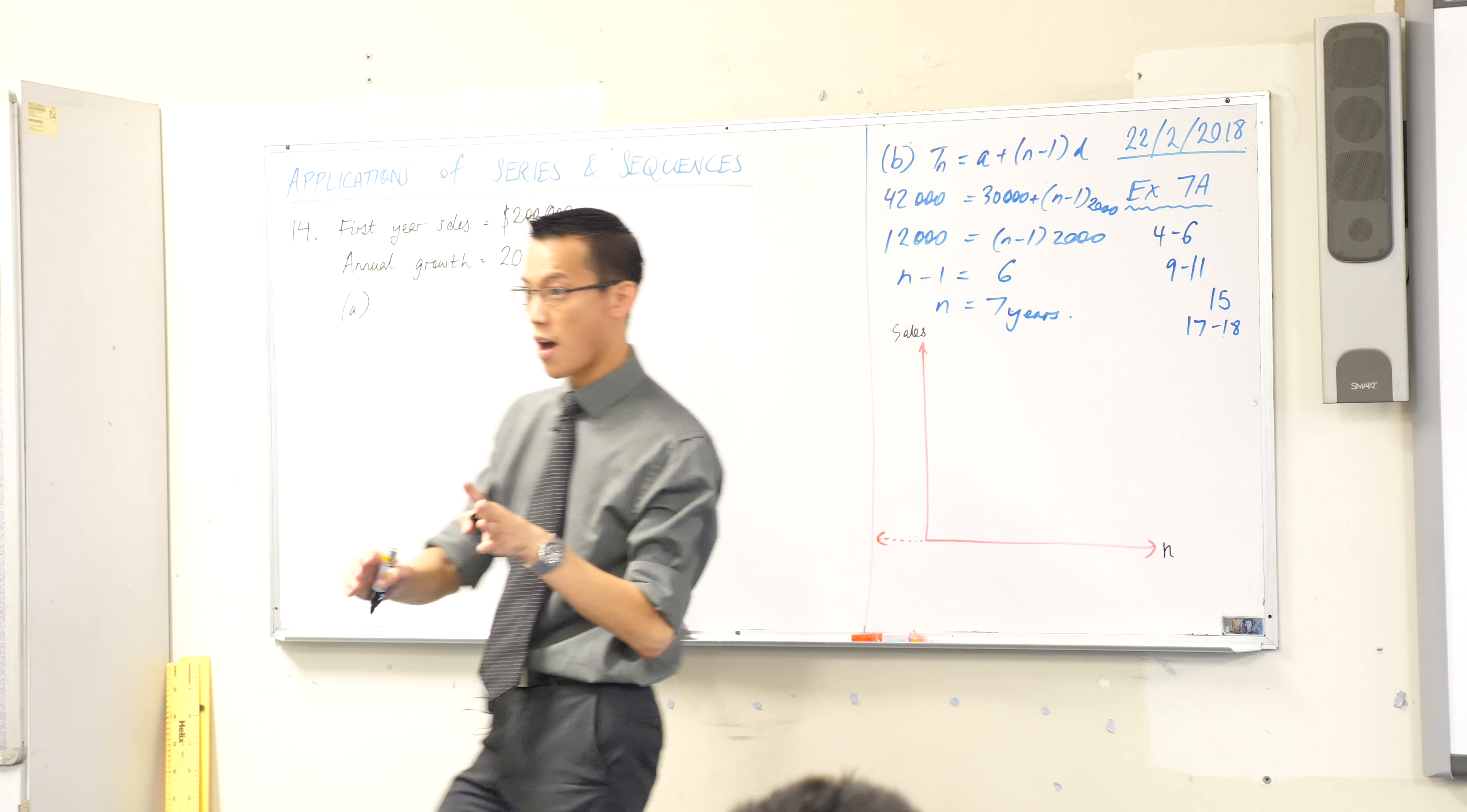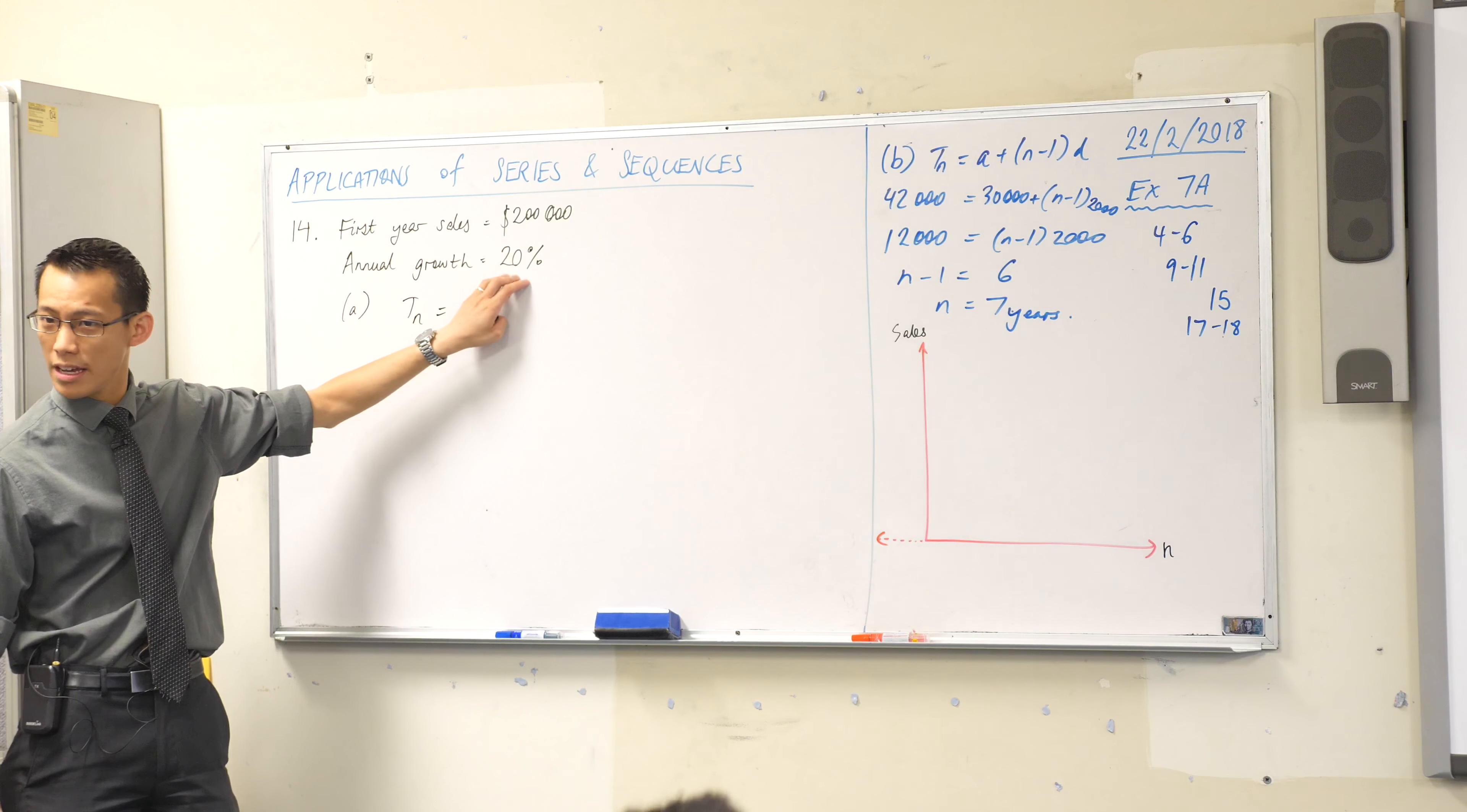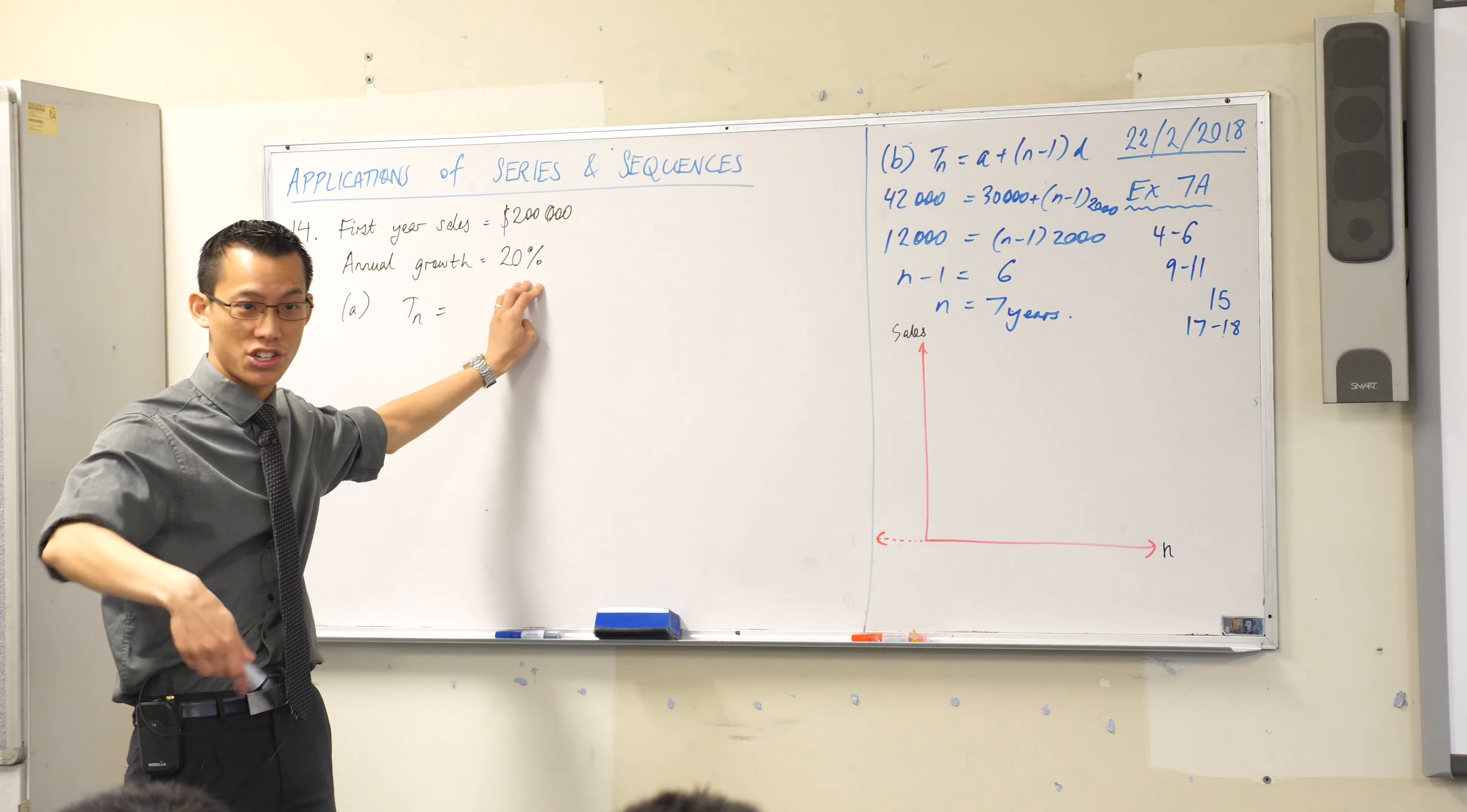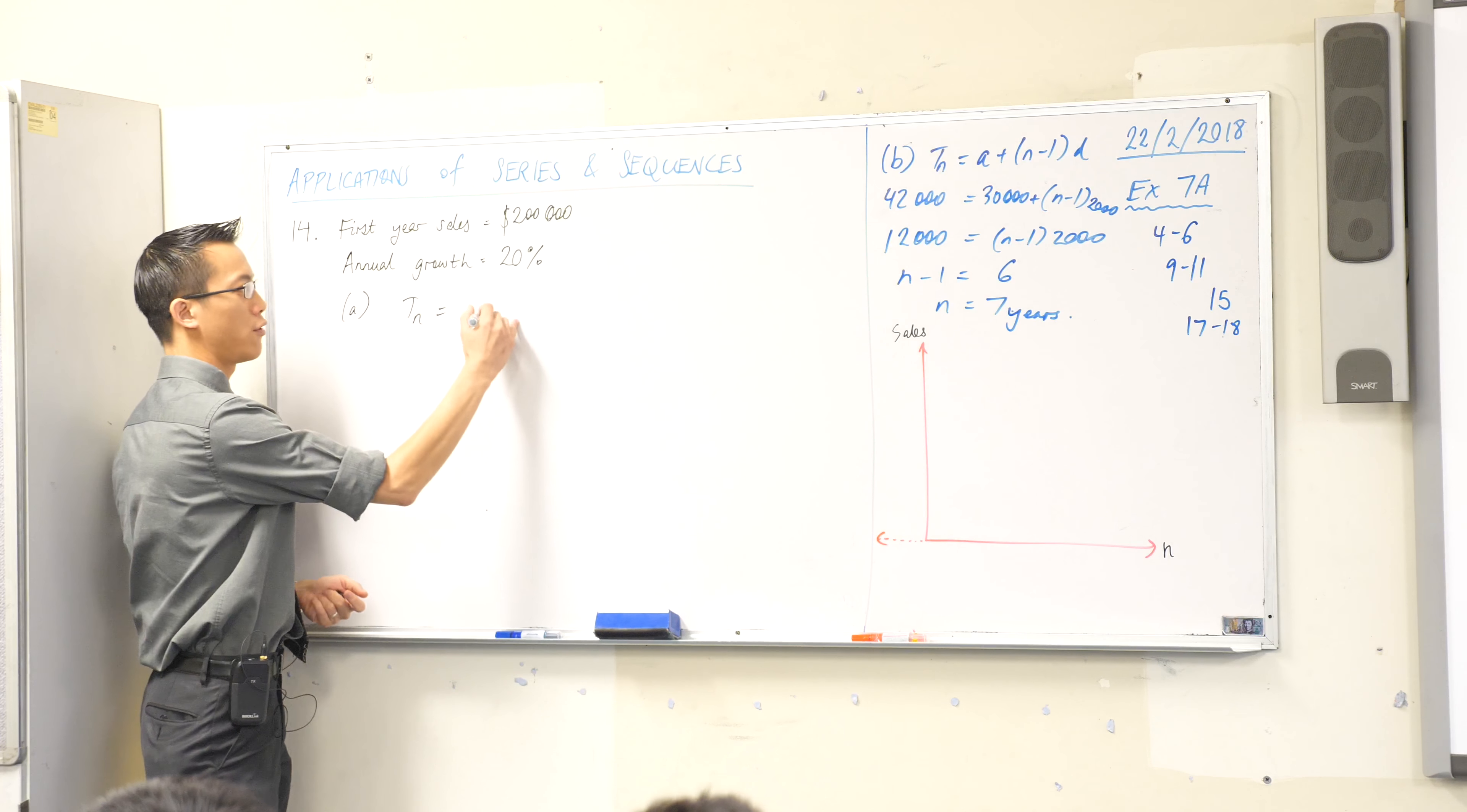Okay so I'm just going to write T of N equals. Have you thought about this 20%? It means that you're going up by a different amount each time. The further you are in the future, the more you're growing by. So this is not an AP, this is a GP as we pointed out before.